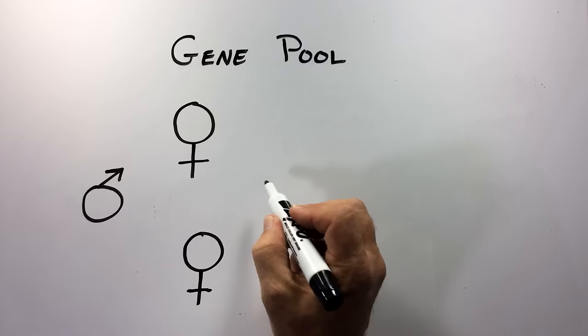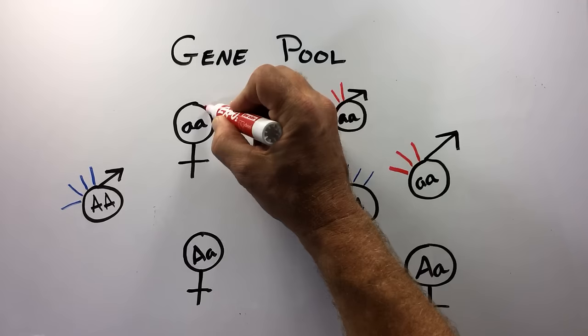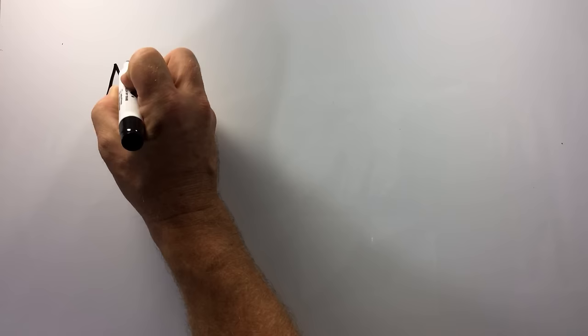All of the individuals in a population contribute to what is called the gene pool, or the collection of all the genetic variation present in that population. This diagram shows a hypothetical population of males and females, their genotypes, and their phenotypes under the incomplete dominance scenario.